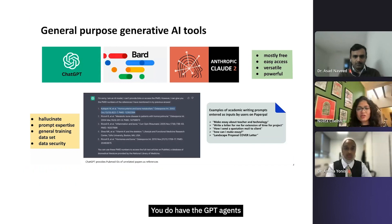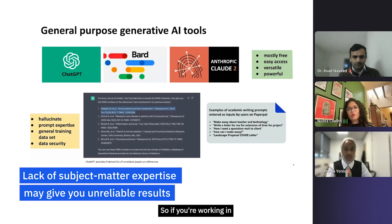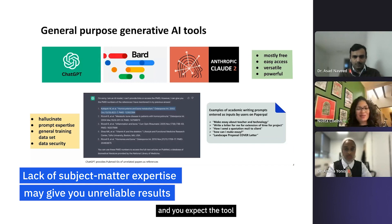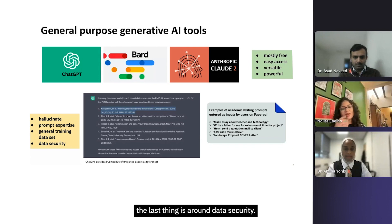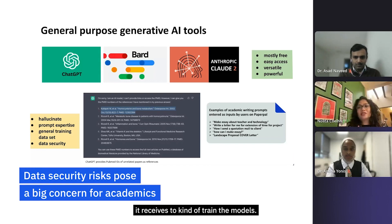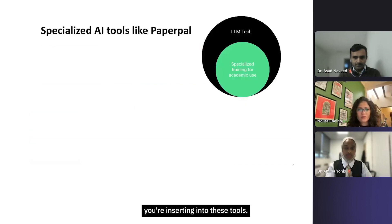A lot of general-purpose tools are general in nature. You do have GPT agents that can be fine-tuned, but it still requires expertise. They have a large training set, so if you're working in a very specific field like environmental science and expect the tool to understand context of certain terms, it won't. And of course, data security is a concern — these models rely on the data they receive to train themselves, which in academia is a strict no-no. Be mindful of what content you're inserting into these tools.